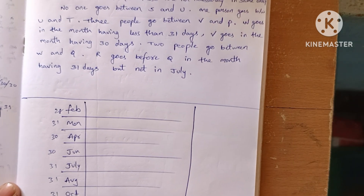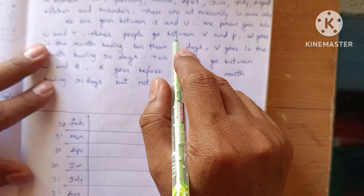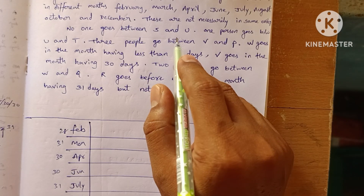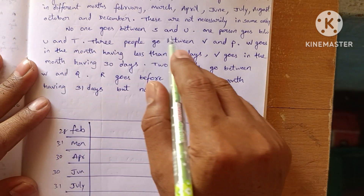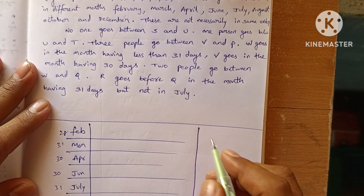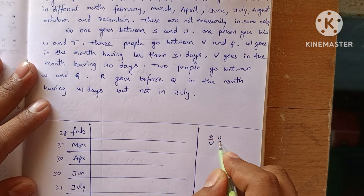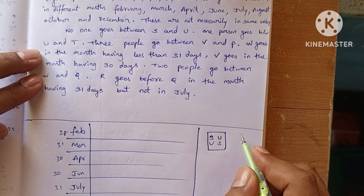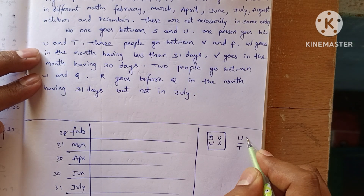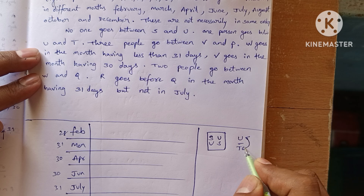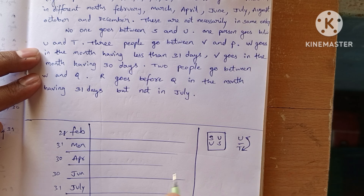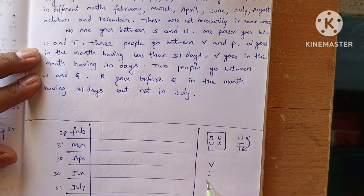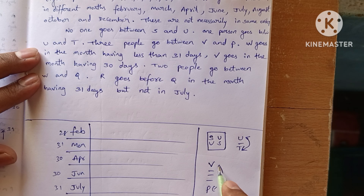Clue one: no one goes between S and U, meaning S and U are adjacent to each other. Clue two: one person goes between U and T. Clue three: three people go between V and P.